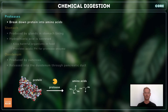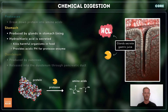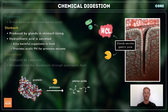Proteases are a group of enzymes that chemically digest large insoluble proteins into amino acids, their soluble subunits. Glands in the stomach lining secrete gastric juice containing protease, as well as hydrochloric acid. The acid kills any harmful organisms that may have been ingested with the food, and provides an acidic pH for optimum enzyme activity.